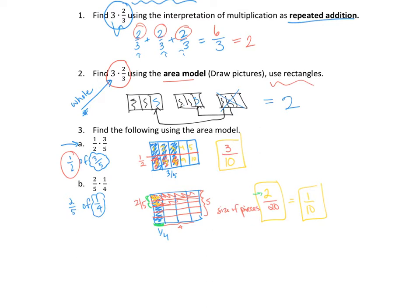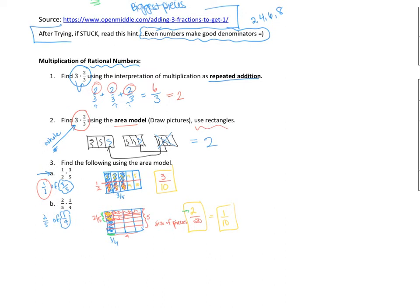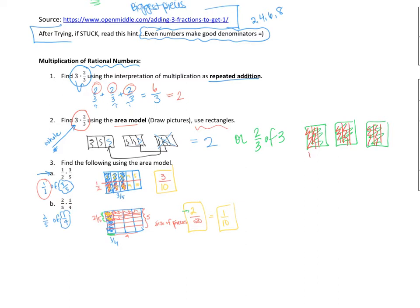Looking back at three times two-thirds interpreted as 'of': if you have three wholes and want two-thirds of that, break each whole into thirds and take two-thirds of each. That gives two-thirds from this piece, two-thirds from that piece — totaling six thirds altogether, which equals two.